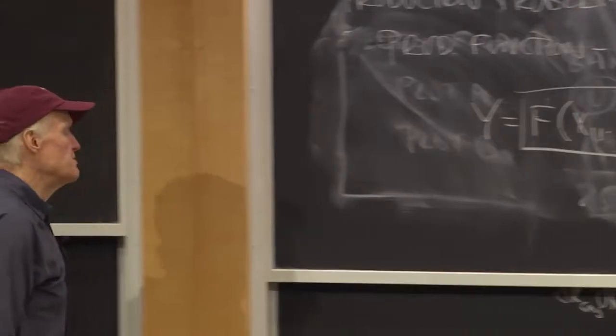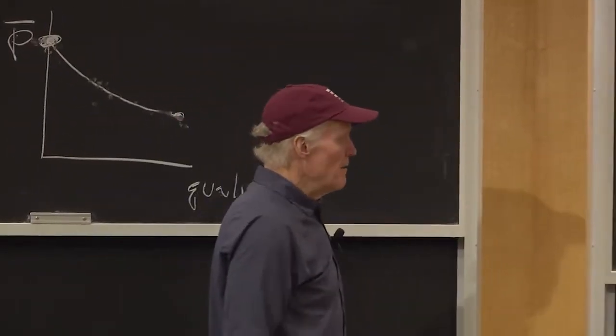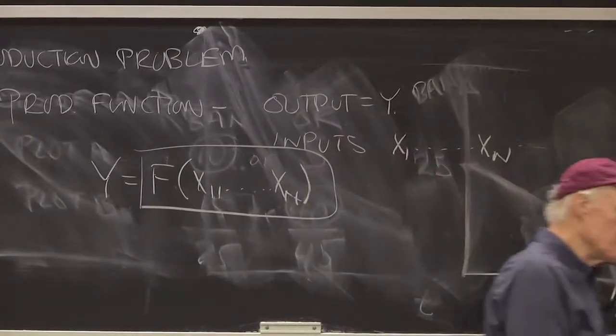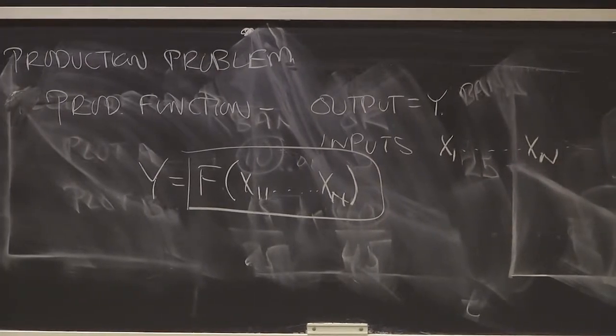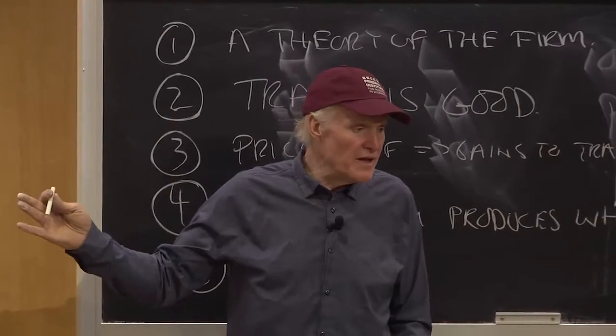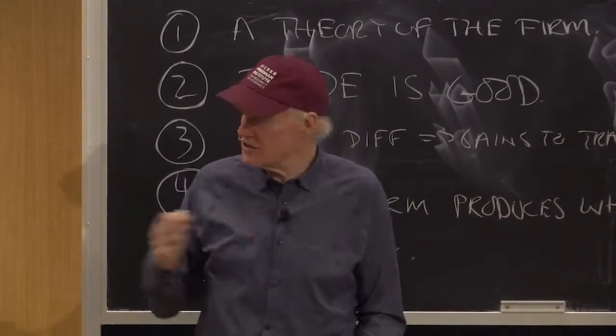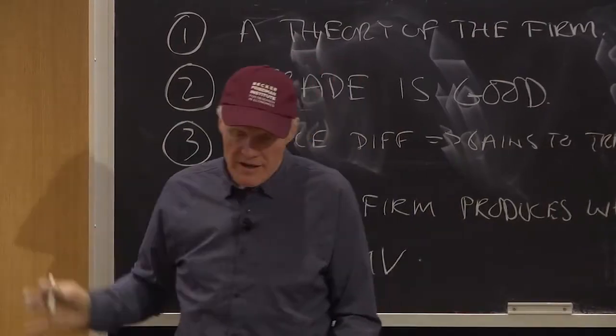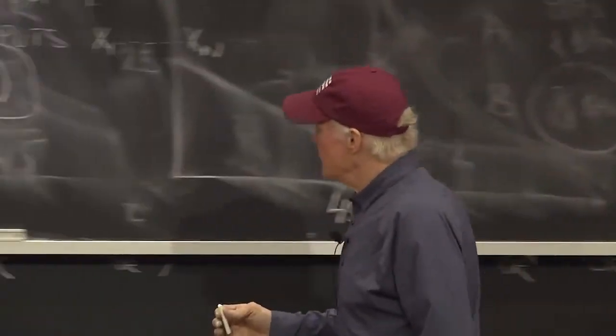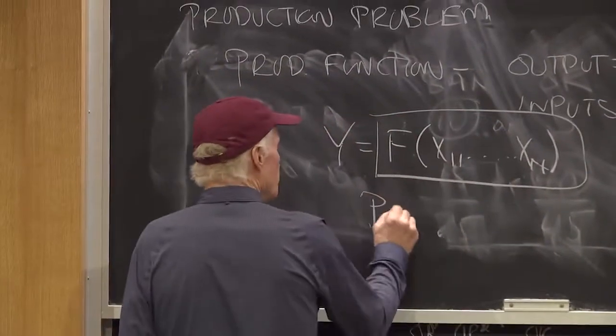So, that's my model. I'm going to assume you're a competitive firm. What do I mean by a competitive firm? What I mean is, there's a price of output and there's prices of inputs that I don't affect. I am a price taker in the market, just like my guy on the island was in NAFTA. So, P is going to be the price of output.